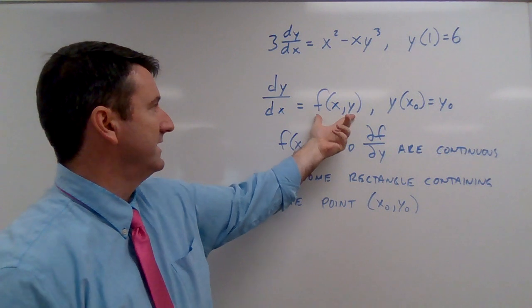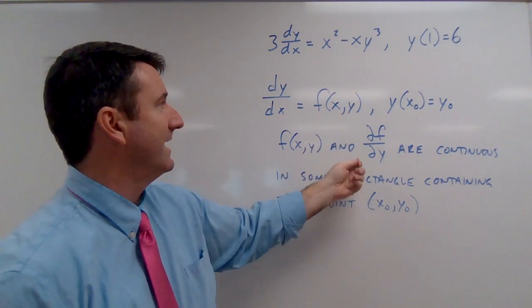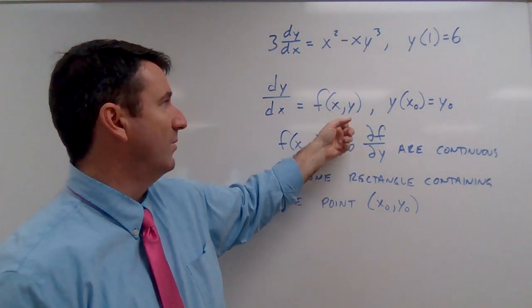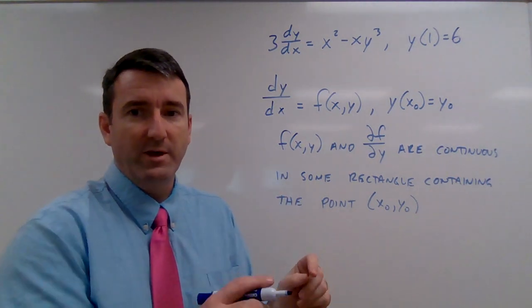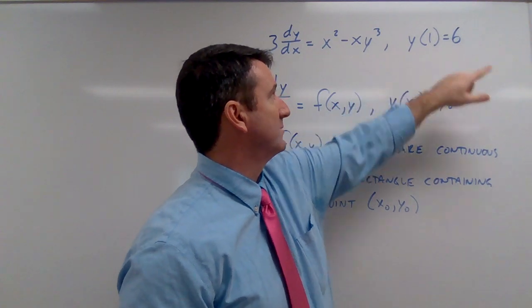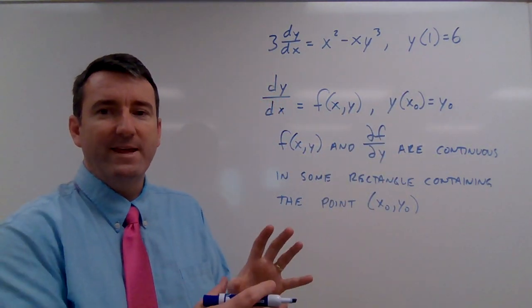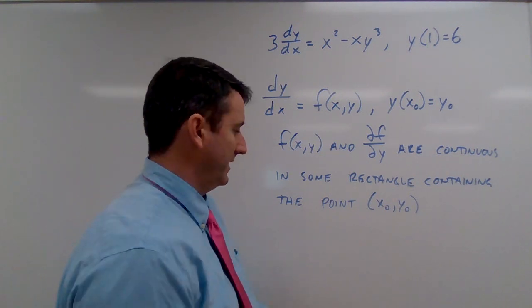So that's our theorem: if both this function f of xy and the partial derivative of that function with respect to y are continuous over some rectangle that we can draw around this point x naught, y naught, then we're going to say that a unique solution exists for some interval.